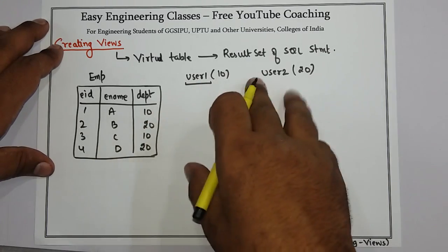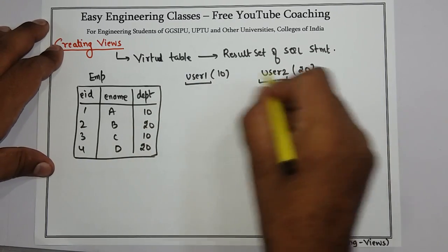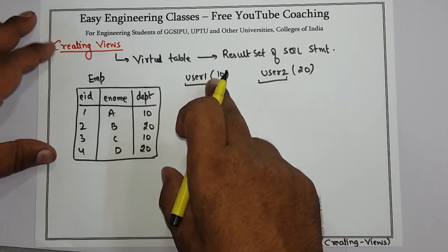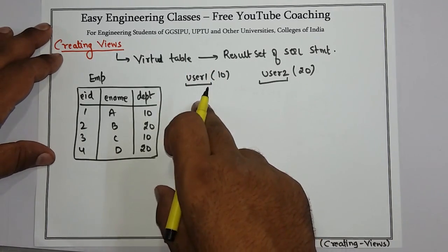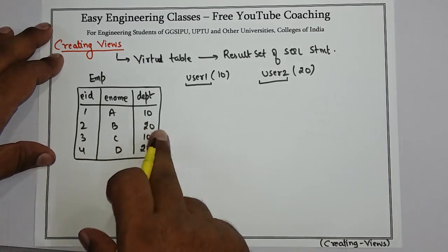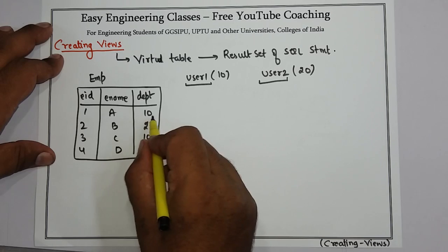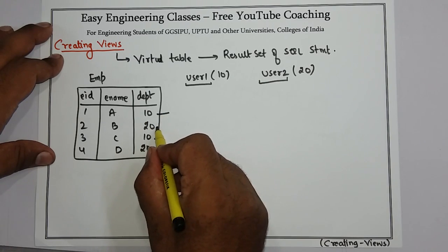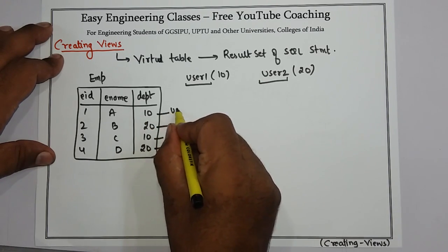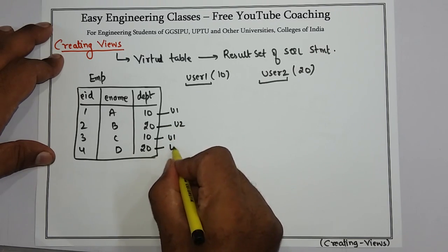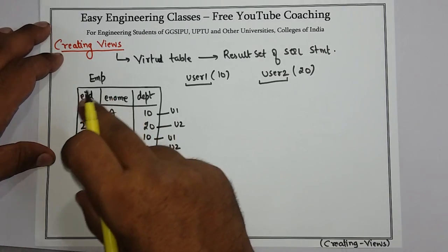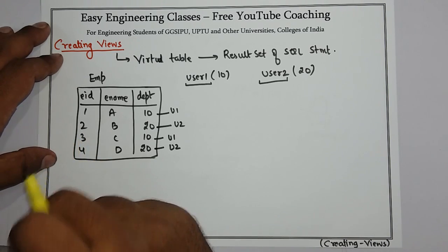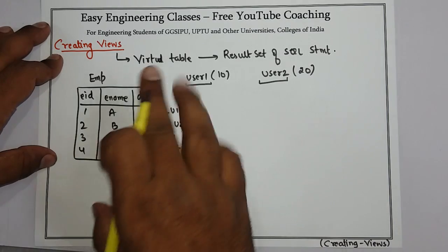Now both users, user1 and user2, are accessing this particular table employee. But since user1 is handling department 10 only, he should not be able to see the details of department 20. He should be able to see the details of only his department, and user2 should be able to see only his department's details. Using a table it is not possible. One way is to create different tables, but creating a table is not recommended because it takes physical space.